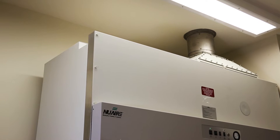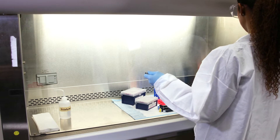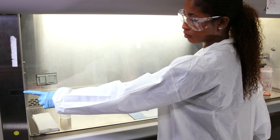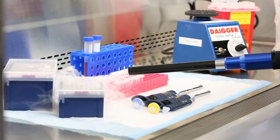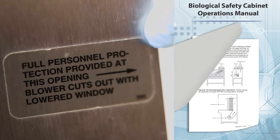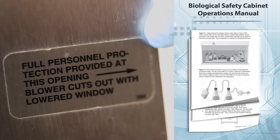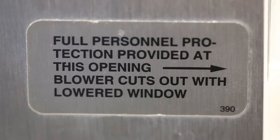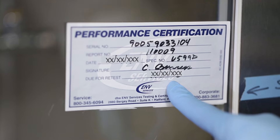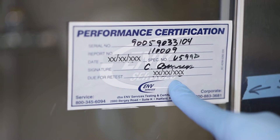Placing a BSC too close to an HVAC supply vent can also interfere with the BSC containment. Proper sash height is critical because when the sash is kept at the proper height, the appropriate inward air flow can be maintained. The proper sash height is designated in the BSC operation manual and should be clearly indicated on the BSC. The performance of the BSC at the declared sash height is actually part of the cabinet certification process.